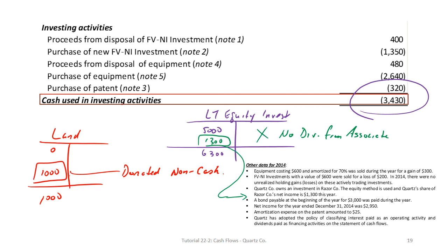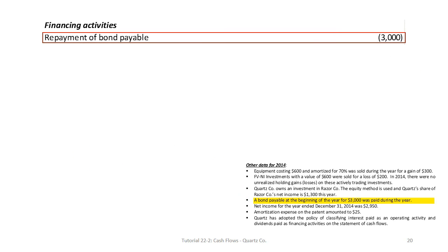The company has positive cash from operating activities and negative cash from investing activities, mostly related to the purchase of equipment and the FV investment. The financing section deals with long-term liabilities and shareholders' equity — essentially the two ways companies raise money: debt and equity. From the data, a bond payable of $3,000 outstanding at the beginning of the year was paid off during the year.